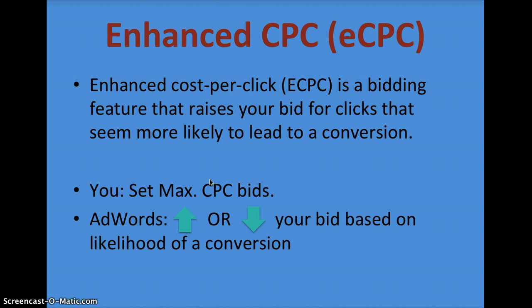And there's also eCPC. eCPC is a bidding feature that raises your bid for clicks that seem more likely to lead to a conversion. You set your max eCPC and then AdWords will increase or decrease that bid based on the likelihood of a conversion — it's a back-end system that analyzes how likely a click is to get a conversion for you.